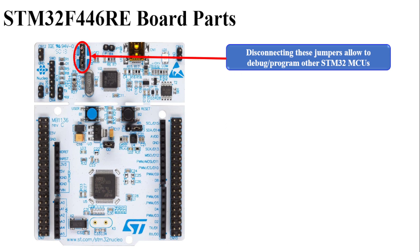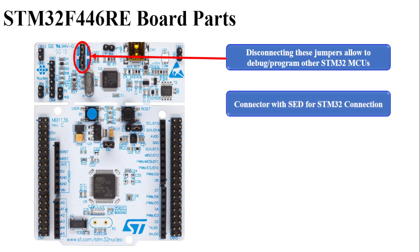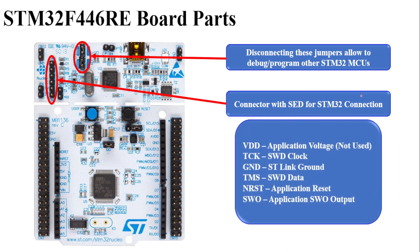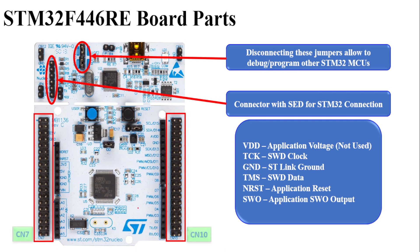There are two jumpers provided on the top left of the microcontroller board. Disconnecting these jumpers allows you to debug and program other external microcontrollers within the STM32 family. There is also a connector with SWD features for STM32 connection, providing VDD, SWD clock, ground, SWD data, reset pin, and SWO application output.